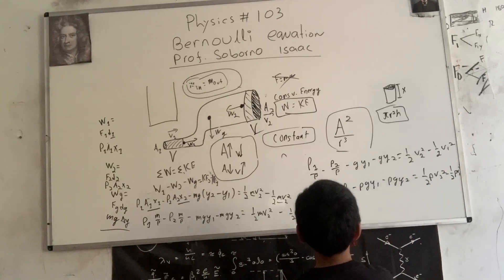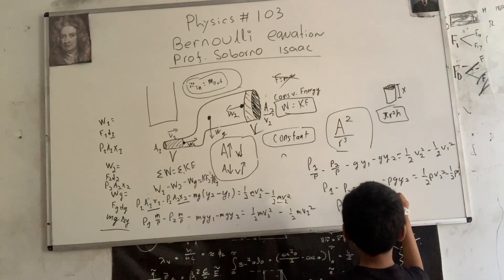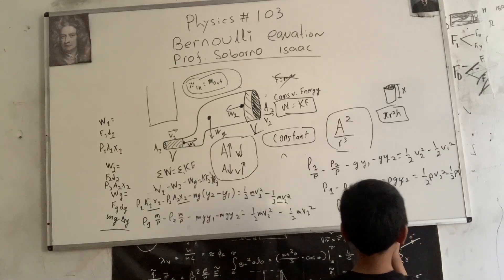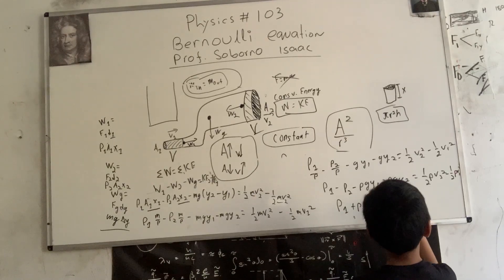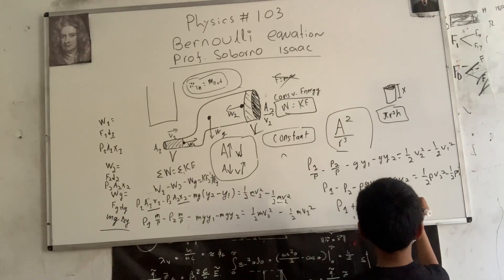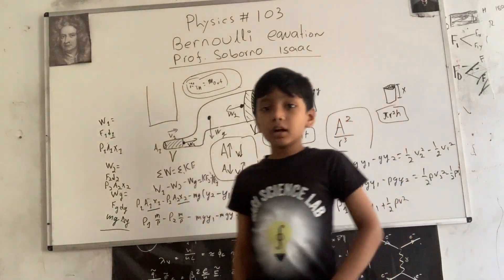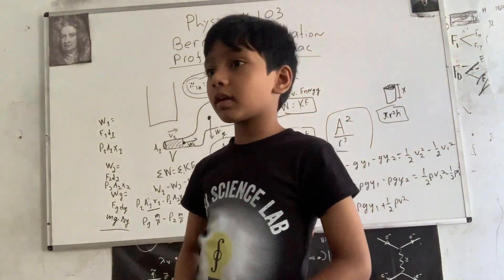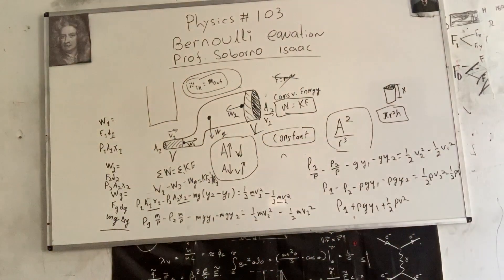I'm sorry — there may be a flaw in one of my steps, but the concept that this is supposed to arrive at is: P1 plus rho·g·Y1 plus one-half rho·V1² equals P2 plus rho·g·Y2 plus one-half rho·V2² — that should be the result, which is Bernoulli's equation.